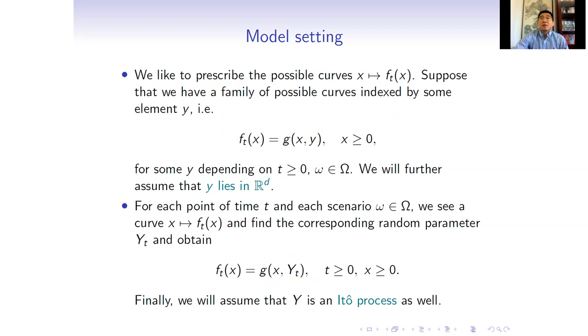We like to prescribe the possible curves which we can see in the market in as simple as possible mathematical way. The simplest but somewhat generic method of prescribing possible curves is to see that we have a family of possible curves indexed by some element Y. We will further assume that Y lies in Rᵈ. For each point of time t and each scenario ω, we see a curve and define the corresponding random parameter Yt. Finally, we will assume that Y is an Itô process as well.